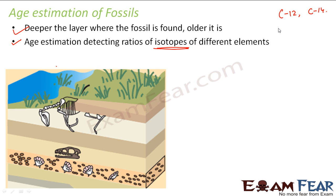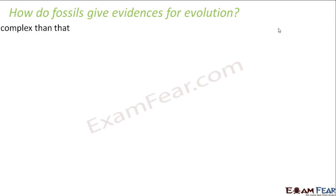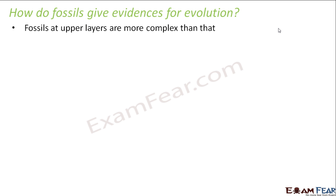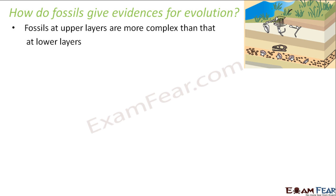So those are the two ways by which the age of a fossil can be estimated. Fossils help us in several ways: they tell us what organisms existed on this earth, which organism existed before and which came after, and when a particular organism existed. Fossils at upper layers are more complex than those at lower layers, which tells us that complex organisms arose from simpler organisms.